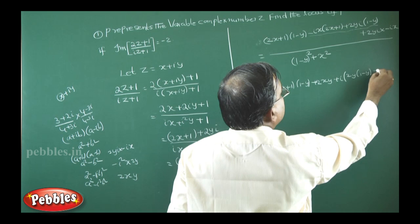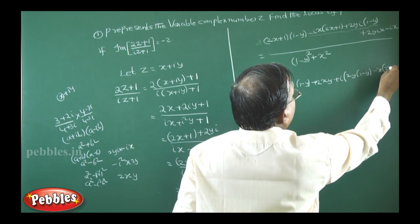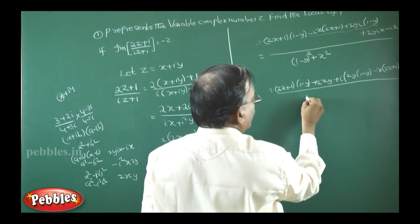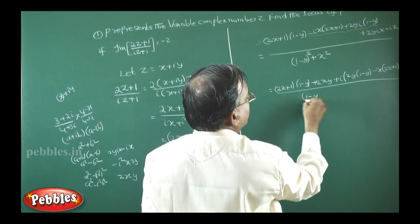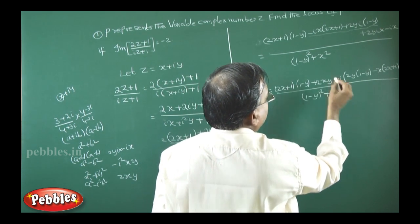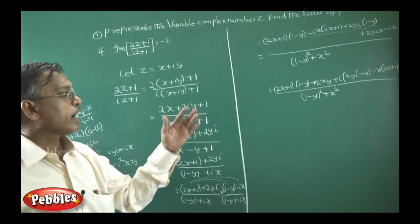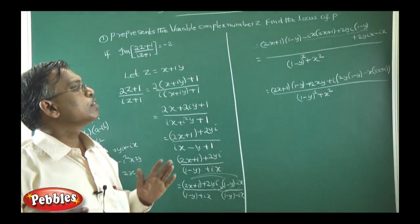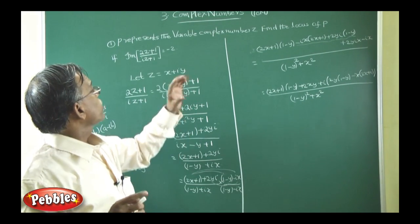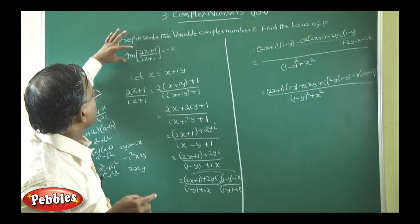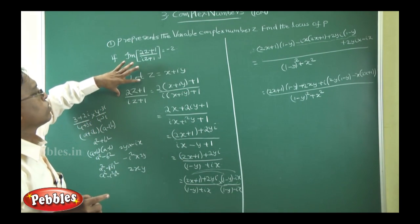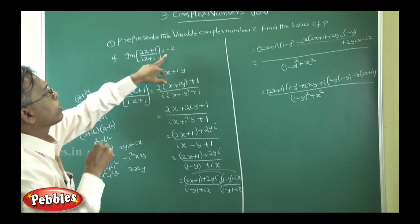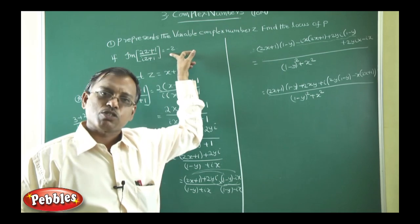So the full expression is: [real part + i × (2y(1 − y) − x(2x + 1))] / [(1 − y)² + x²]. The imaginary part of this expression must equal minus 2, as given. Therefore: [2y(1 − y) − x(2x + 1)] / [(1 − y)² + x²] = −2.